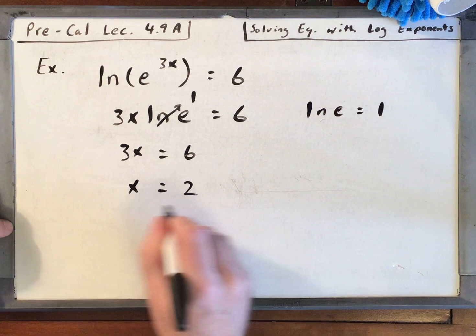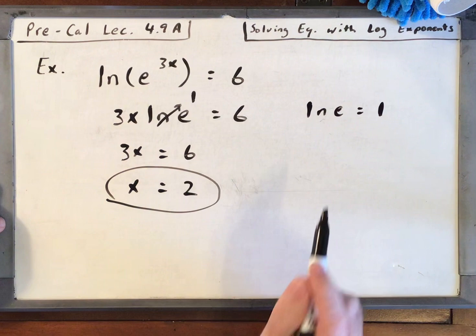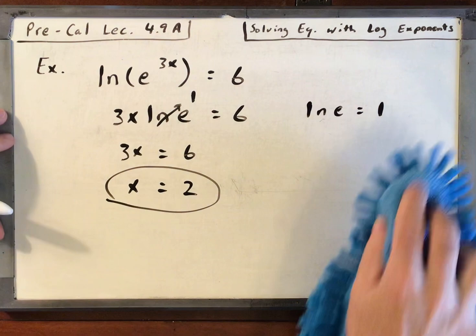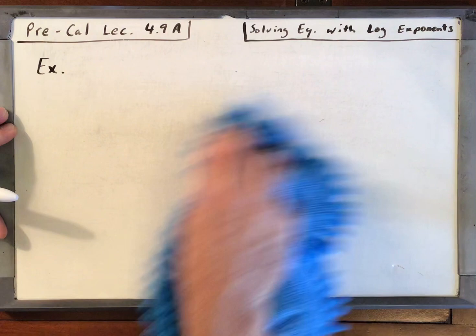Could you check it? Yeah, put a 2 in right there. Put it in your calculator, it'll check. That is going to equal 6. Natural log of e to the 6 is equal to 6.